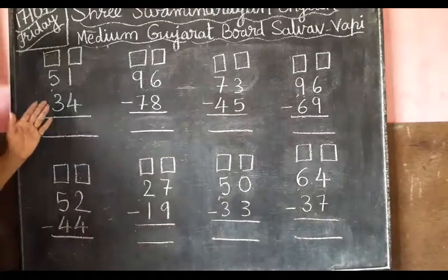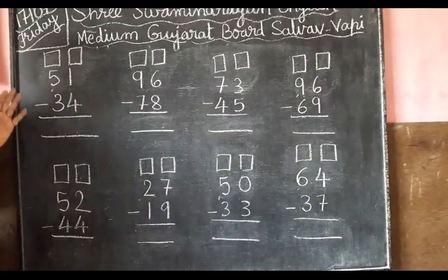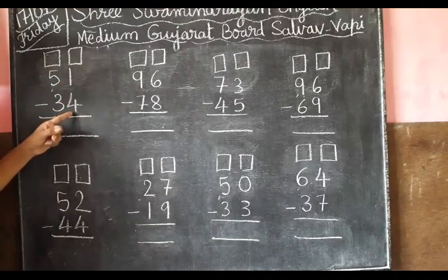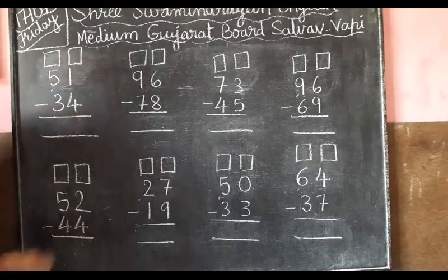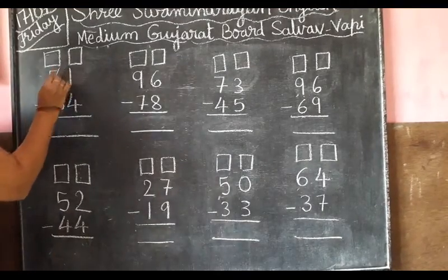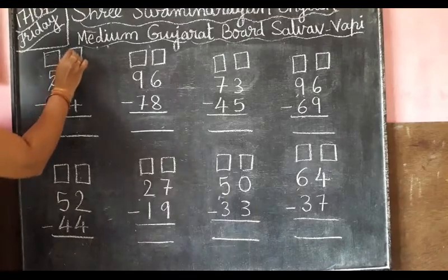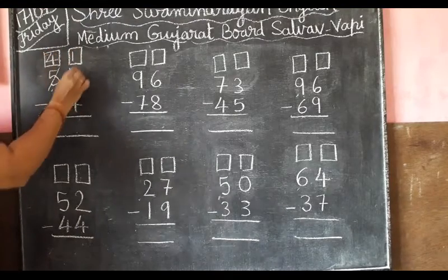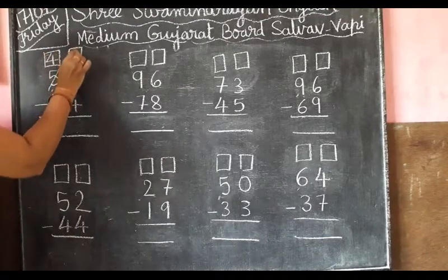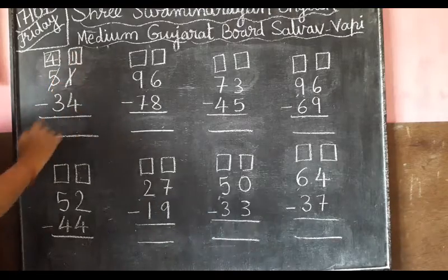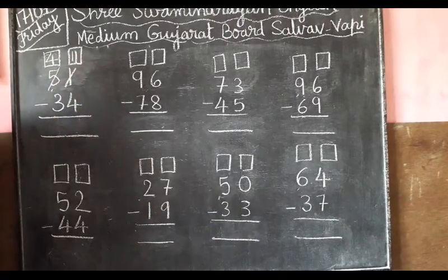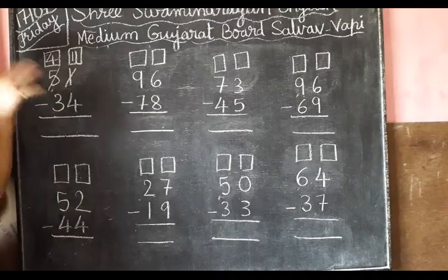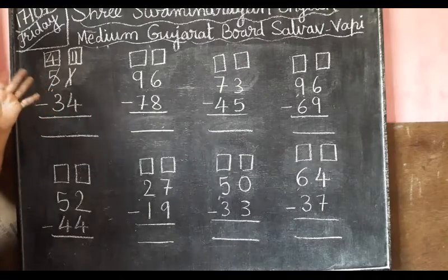Now next question, same as it is. From 1 we can't cut 4, so we have to borrow from 5. Take 1 from here and here less 4, cut 11. Now from 11 minus 4 — counting up: 5, 6, 7, 8, 9, 10, 11. Now 7.